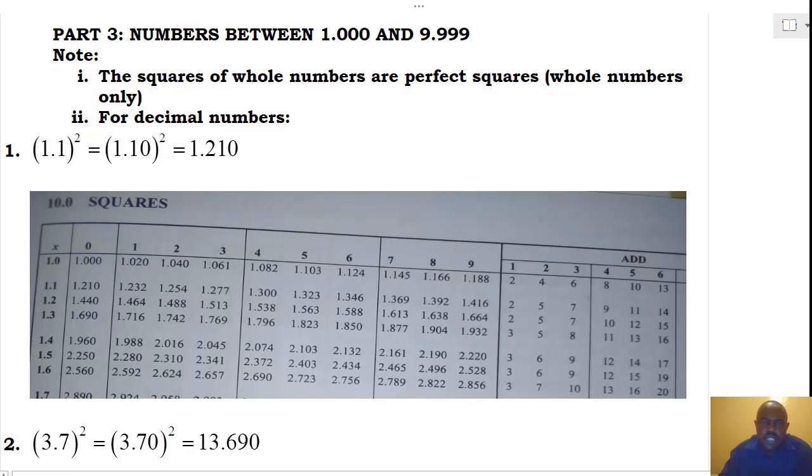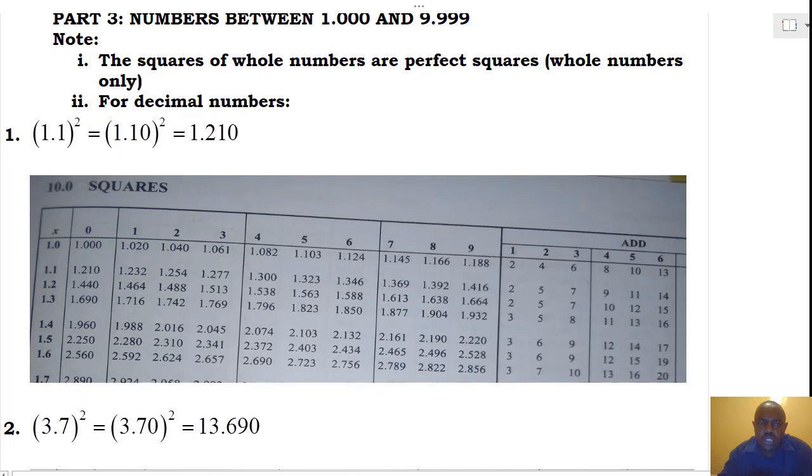After categorizing the numbers, let us now see how these squares are determined. But it is important to note the following: For whole numbers, their squares are also whole numbers. We refer to them as perfect squares. And for decimal numbers, their squares are also decimals. These are the numbers we are going to determine using our squares tables.